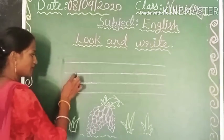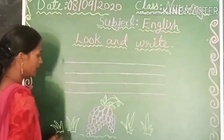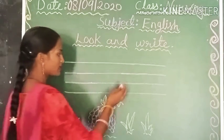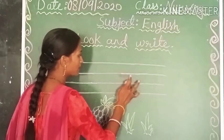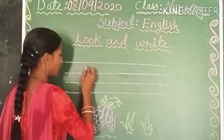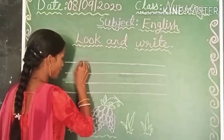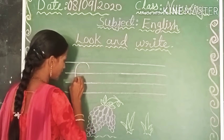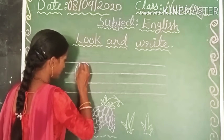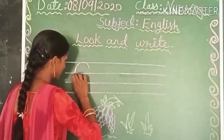G बनाने के लिए, capital letter G बनाने के लिए, हमें क्या करना है सबसे पहले? First of all, we have to draw a circle like this.